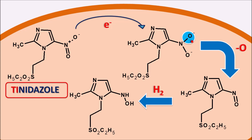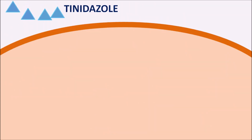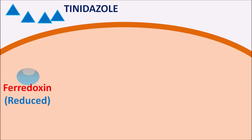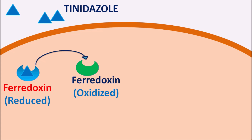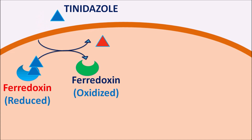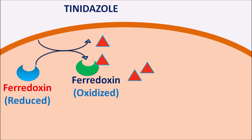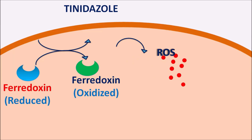Tinidazole enters the microbial cell where it reacts with ferredoxin in its reduced form. The reduced ferredoxin donates electrons to tinidazole, converting ferredoxin to its oxidized form while tinidazole is converted to its reduced form. The reduced tinidazole cannot cross the membrane and accumulates within the cytoplasm. In this way, tinidazole molecules bind ferredoxin and are converted into their reduced forms.